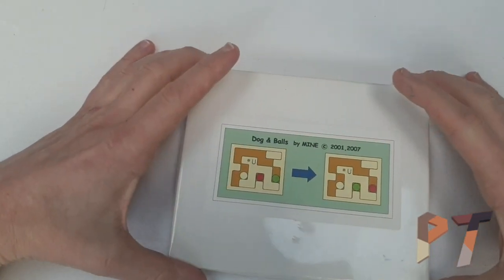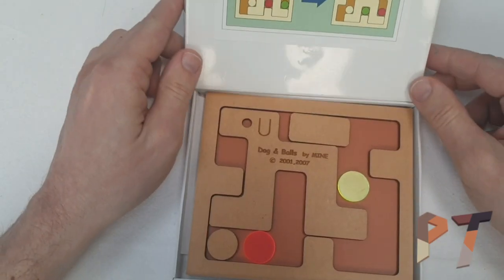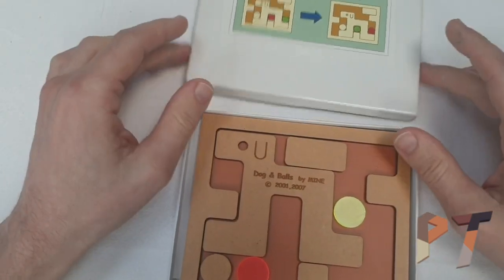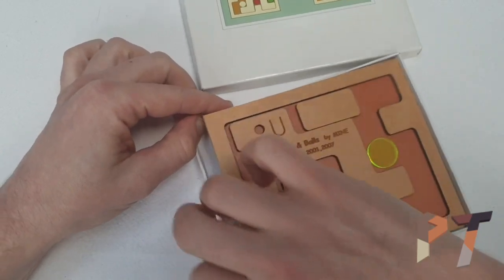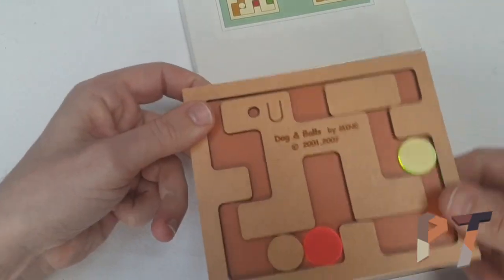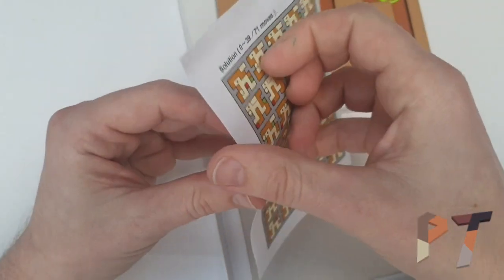The other Mine puzzle I picked up was this one which is called Dog and Balls. Again, this is the 2008 version. I think I do have at the bottom of this the full color solution.